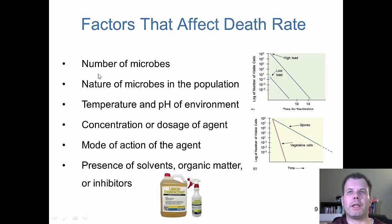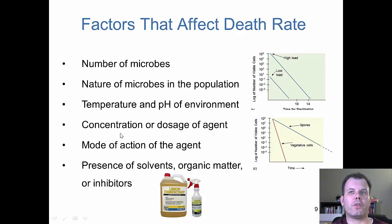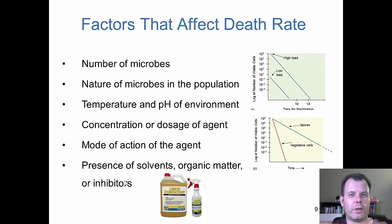Factors that affect the death rate: we can look at the numbers of microbes — obviously the more microbes you have, it takes longer to kill them all. The nature of the microbes in the population — are they the lowest, medium, or highest resistance? The temperature and pH environment play a huge role; the higher the temperature and the pH — either more acidic or basic — can kill microbes faster. The concentration or dosage — a lot of times more is better, but not always. The mode of action of the agent — what does it go after? And the presence of solvents, organic matter, and other inhibitors which can affect the chemical agent. All these things determine the death rate.